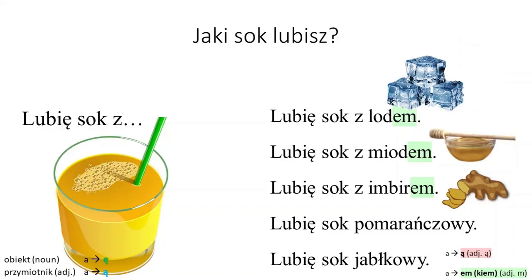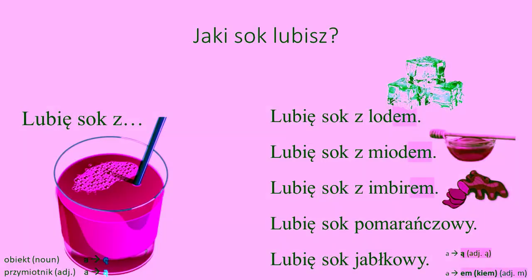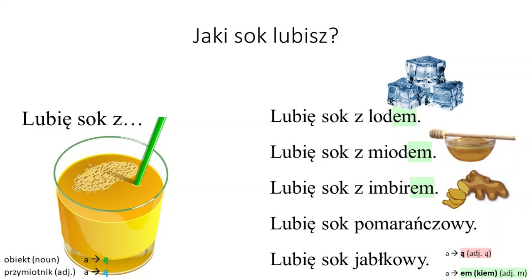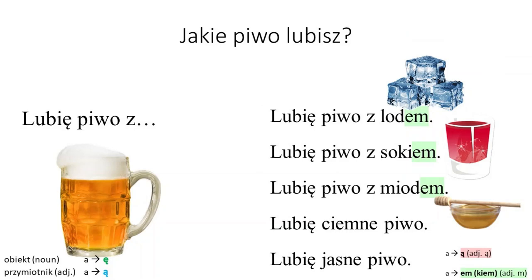Sok — Jaki sok lubisz? Lubię sok z lodem. Lubię sok z miodem. Lubię sok z imbirem. Lubię sok pomarańczowy. Lubię sok jabłkowy. Piwo — Jakie piwo lubisz? Lubię piwo z lodem. Lubię piwo z sokiem. Lubię piwo z miodem. Lubię ciemne piwo. Lubię jasne piwo.